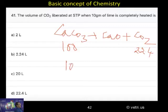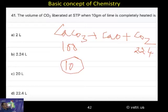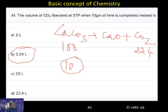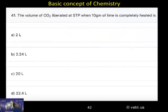For 10 grams, how much volume will be liberated? So 22.4 × (10/100) = 2.24 liters. The answer is (b). Very simple.